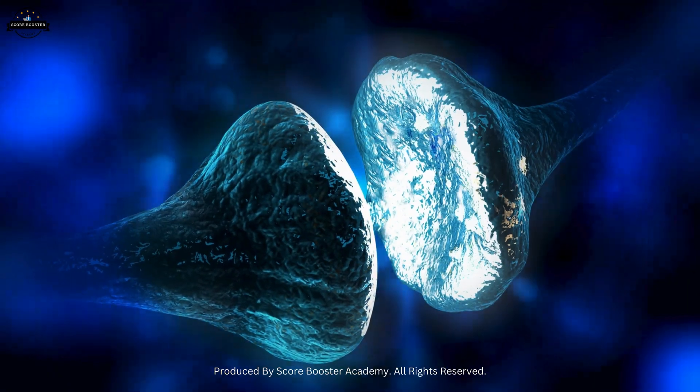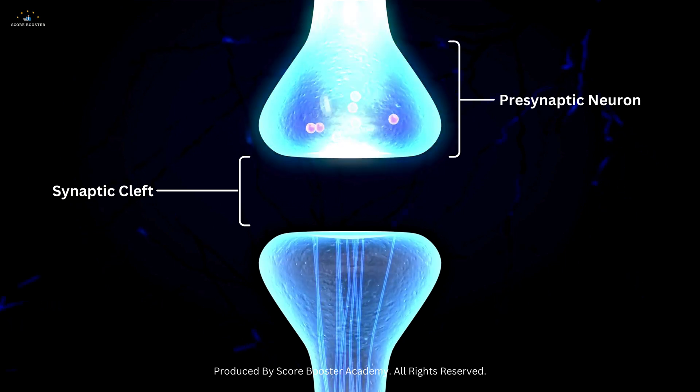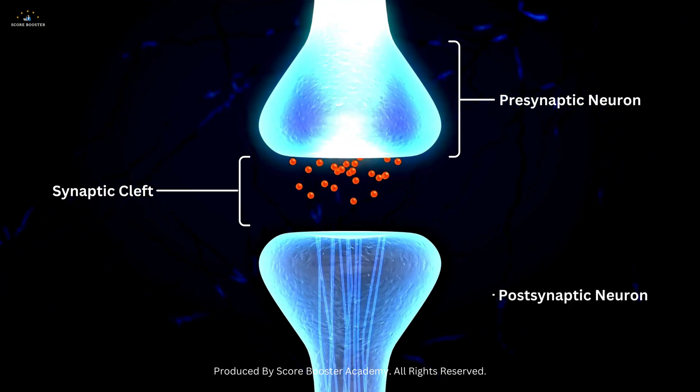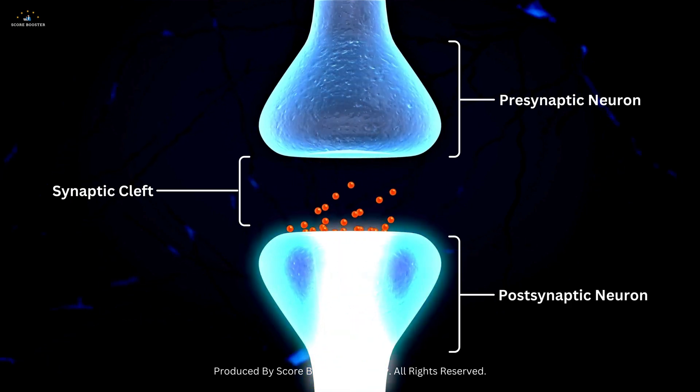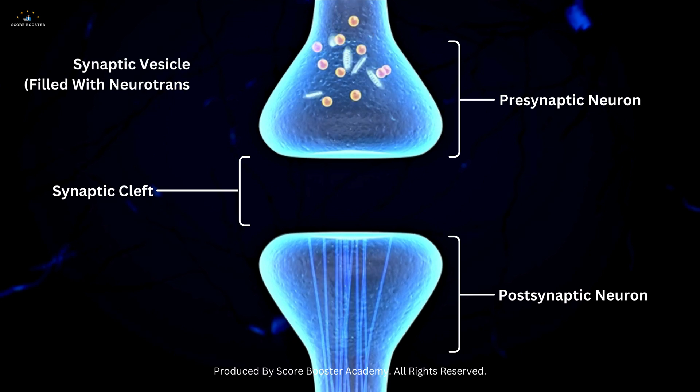On one side of the synaptic cleft is the pre-synaptic neuron, which sends the signal, and on the other side is the post-synaptic neuron, which receives the signal. The pre-synaptic neuron contains synaptic vesicles, tiny sacs filled with neurotransmitters, the chemical messengers of the nervous system.